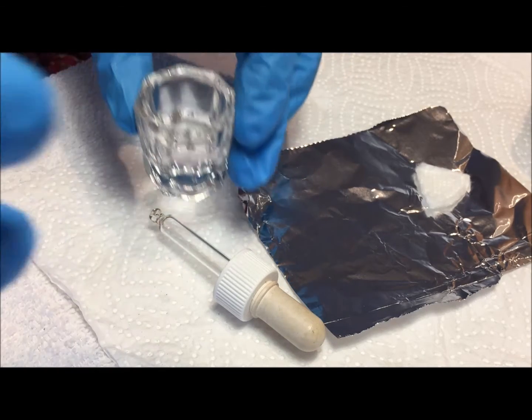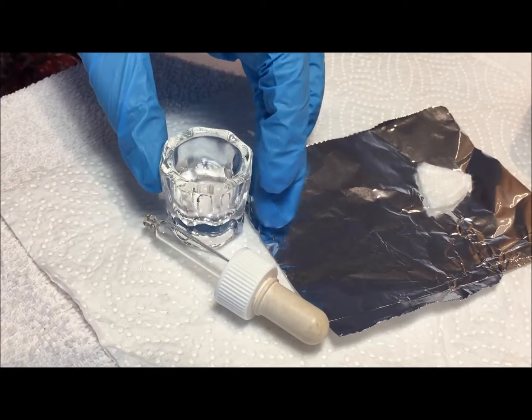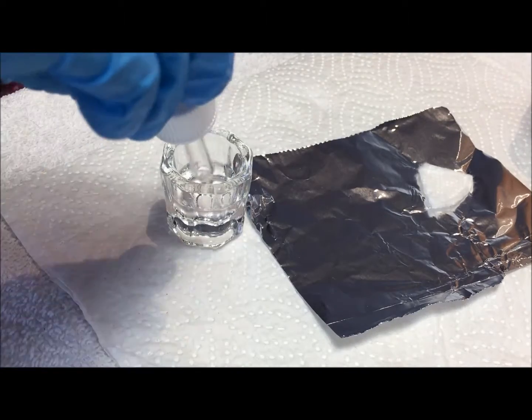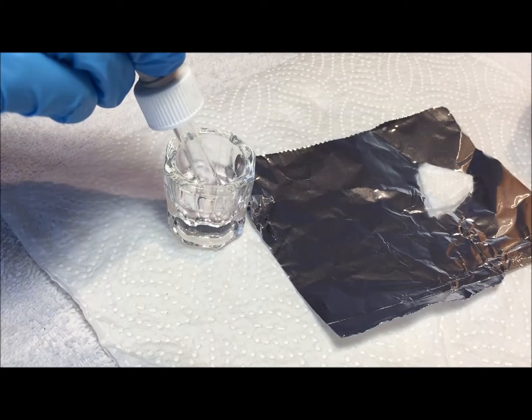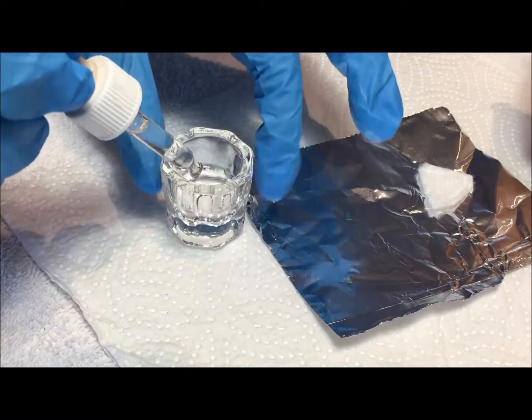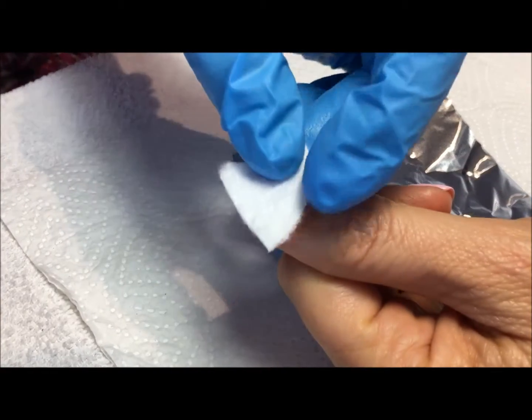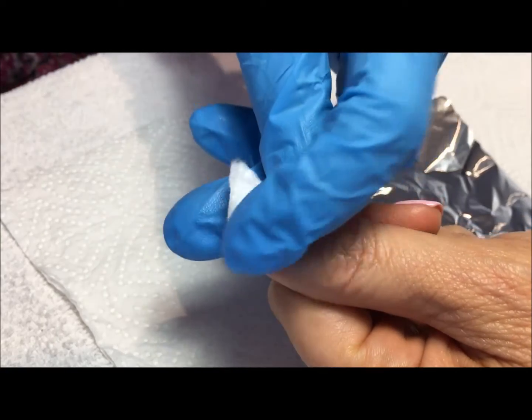Start by applying a barrier layer of cuticle oil onto the skin and cuticles around the nails. After applying your barrier layer, decant some gel remover into a dappen dish. Use a pipette to soak up the gel remover and thoroughly saturate the cotton pad.